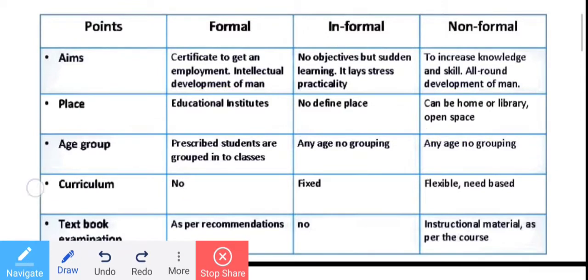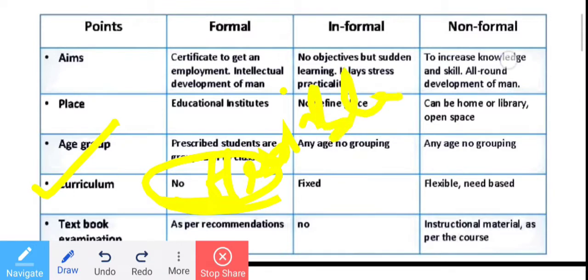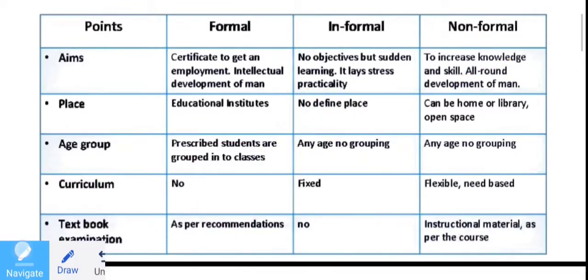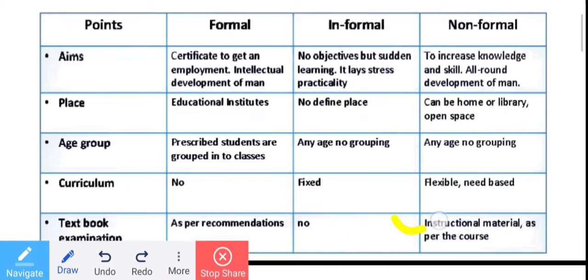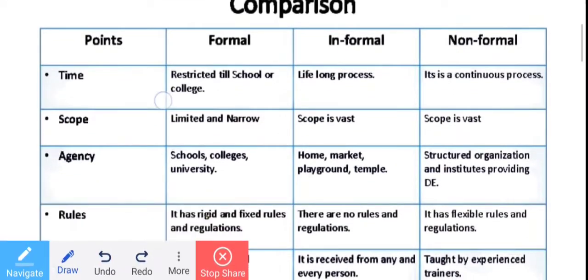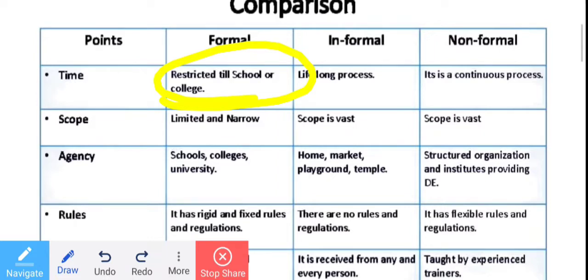Regarding age group: formal is class-wise; informal and non-formal have no fixed age group. Regarding curriculum: formal has a fixed curriculum by NCT or NCF; non-formal is flexible and need-based. Regarding textbooks and examination: informal has no textbook but there is an examination where you learn; formal has time restriction with examinations as per schedule; non-formal is a continuous process.